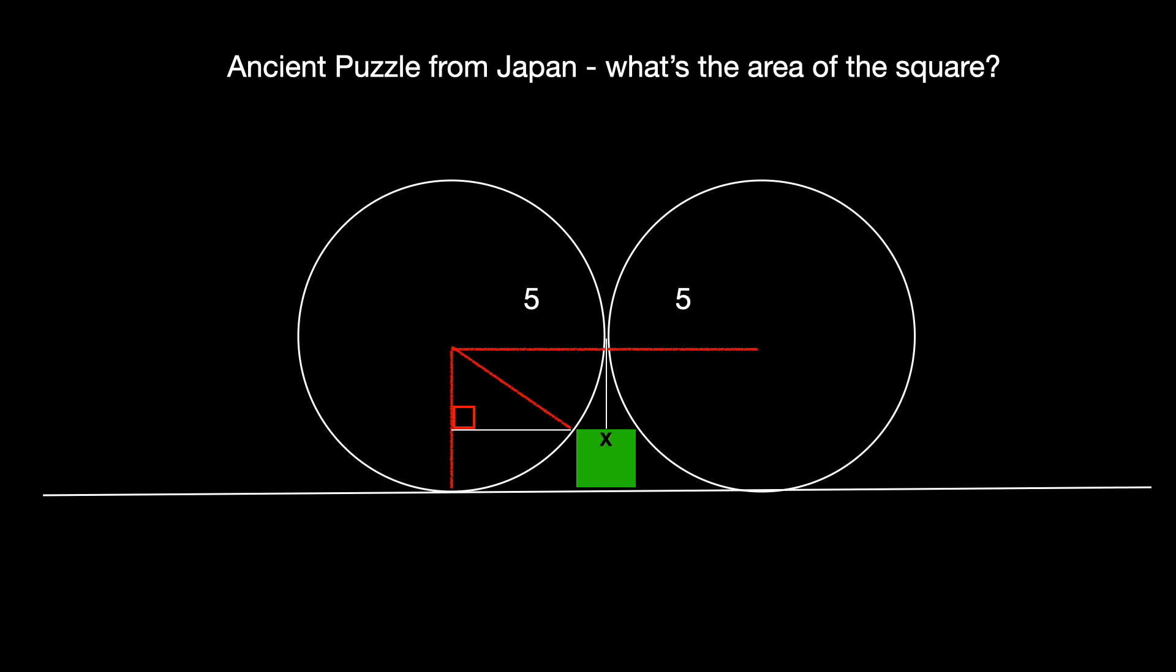Let's call the length of each side of the square x. If we project the top of the square up to where the circles intersect, that side is also of length x and it's divided into two sub-segments of length x over 2.